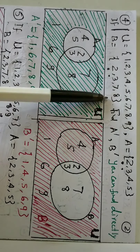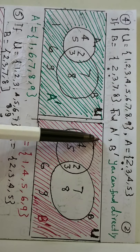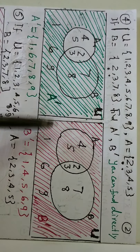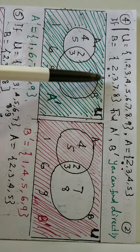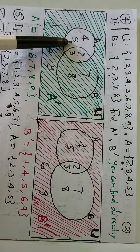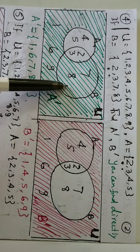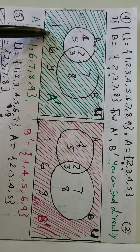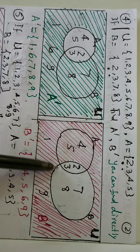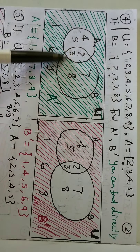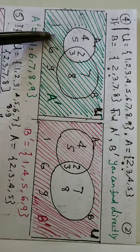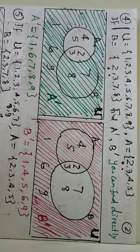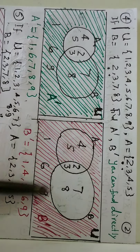Now the fourth number question. U is given, A is given, B is given. Find A complement and B complement. Create the Venn diagram for A and B. The common element 2 and 3 are written in the middle. Remaining elements of A are 4 and 5; remaining elements of B are 7 and 8 at their places. Elements 1, 6, 9 from the universal set are written outside. The green shaded region is called A complement, and the red shaded region is called B complement.